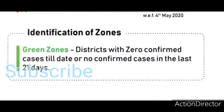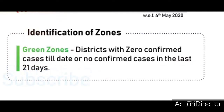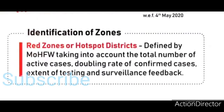We'll begin with the slides now. Identification of the zones is important. Green zones are districts with zero confirmed cases till date, or no confirmed cases in the last 21 days. That is how you identify the green zones.